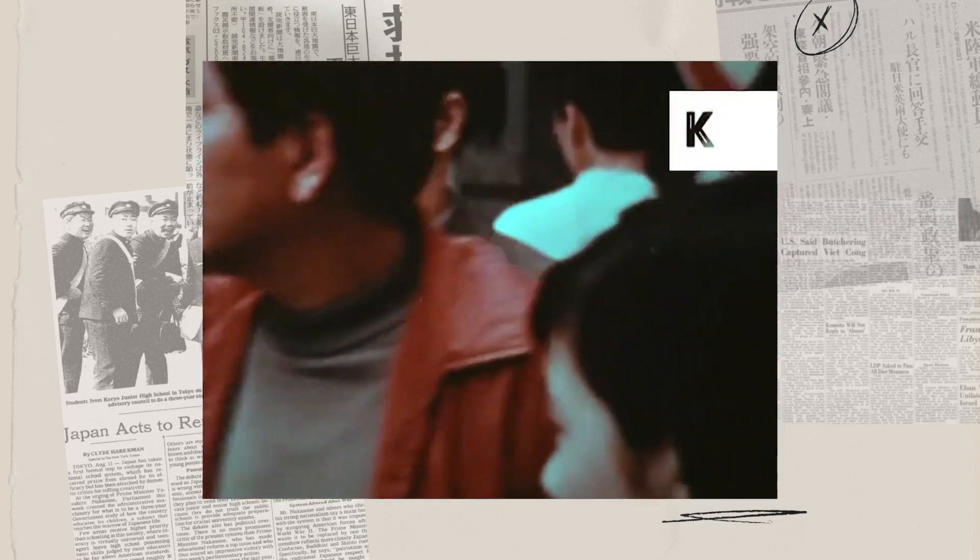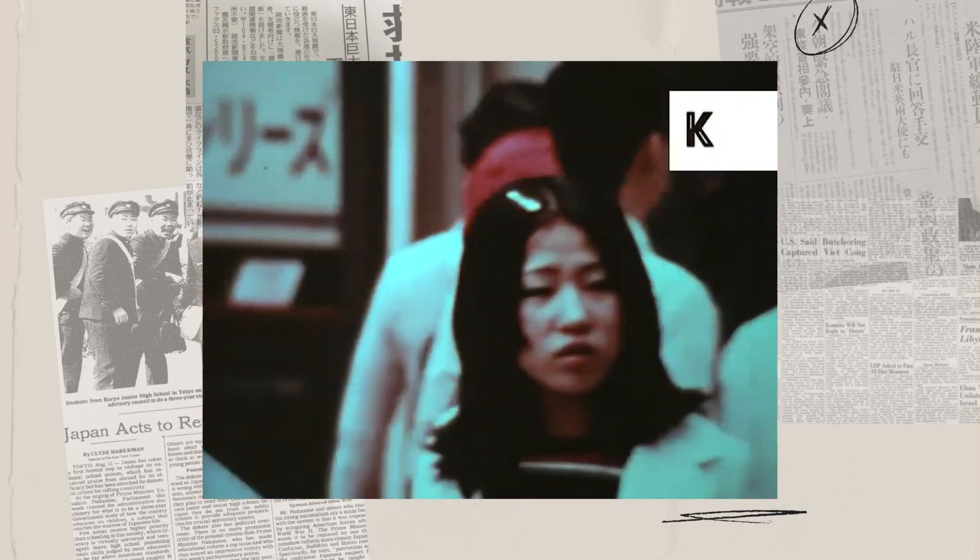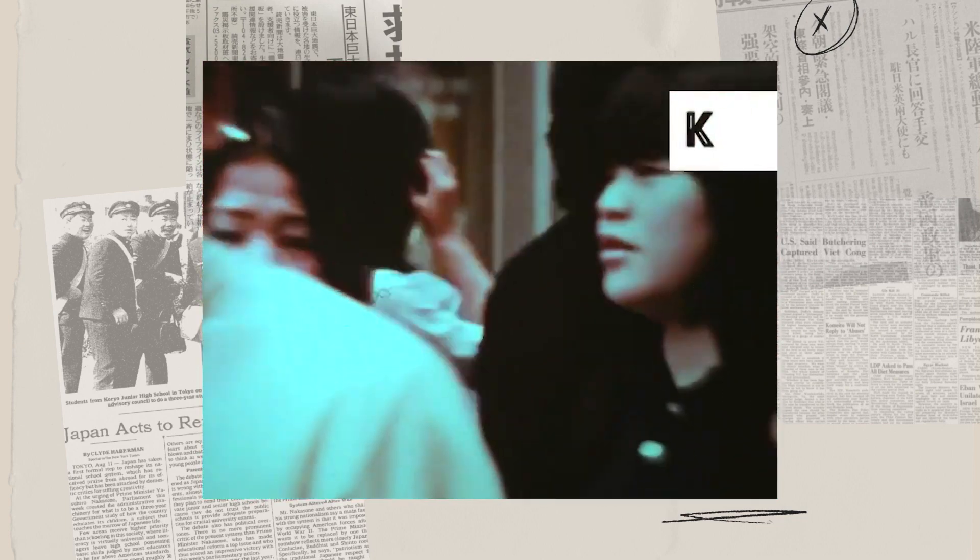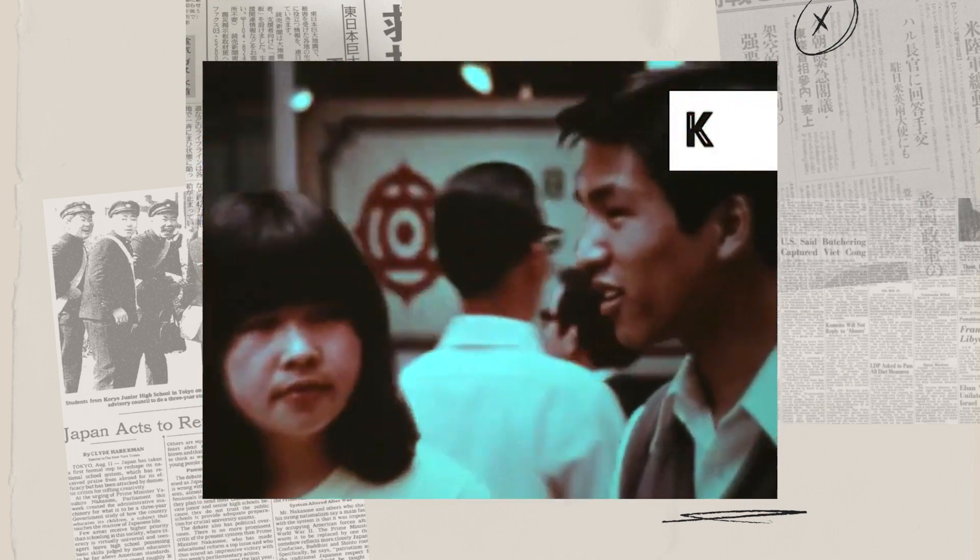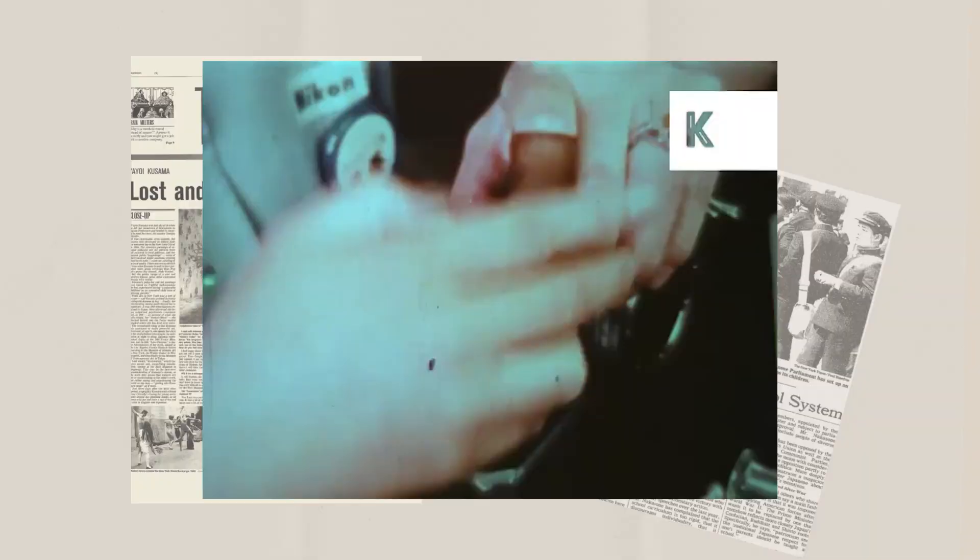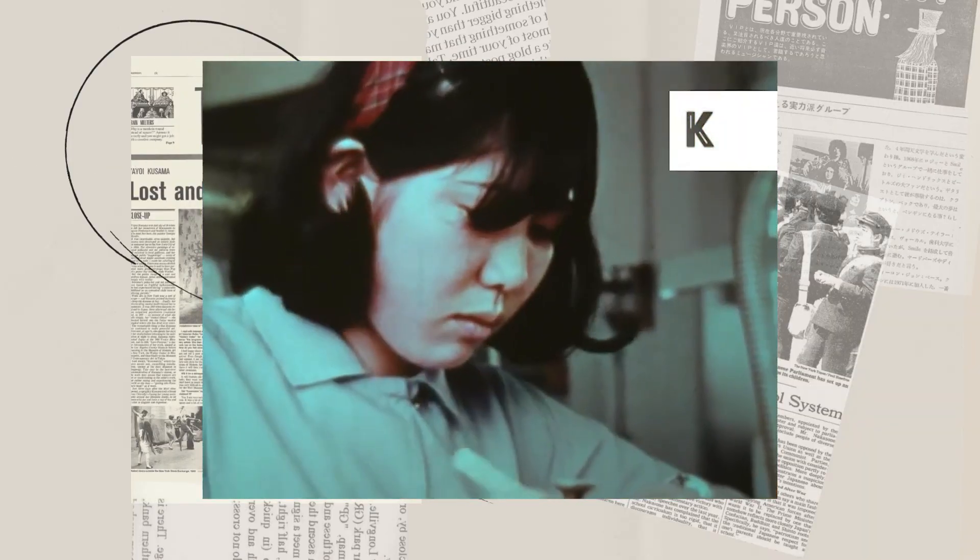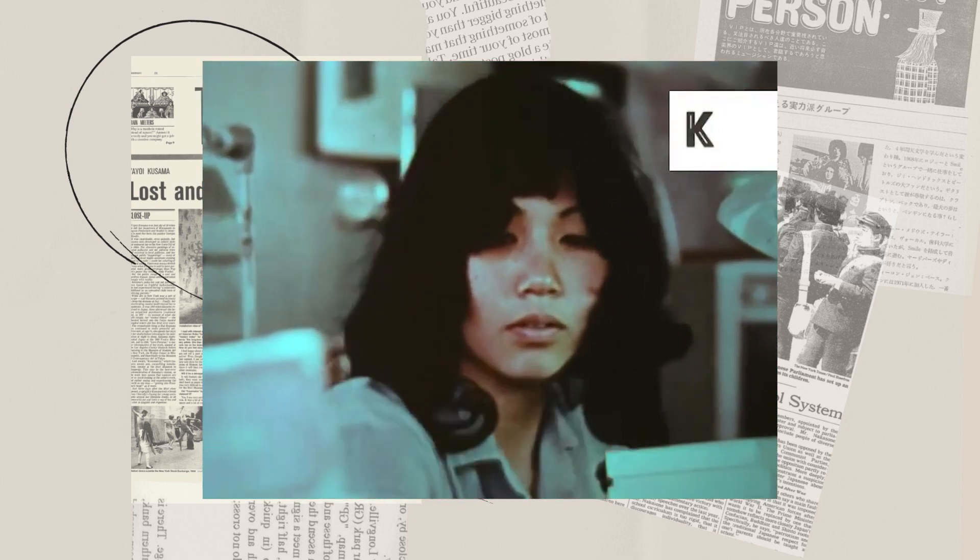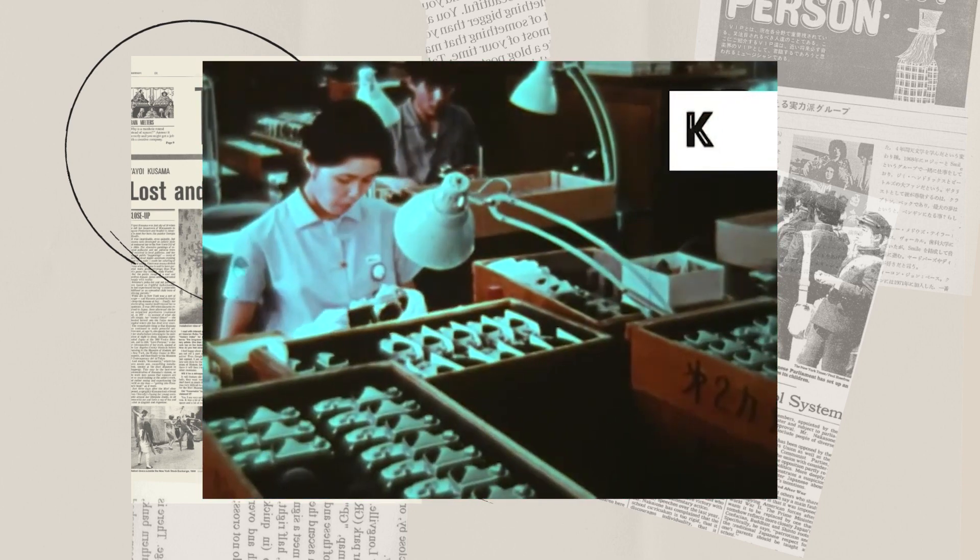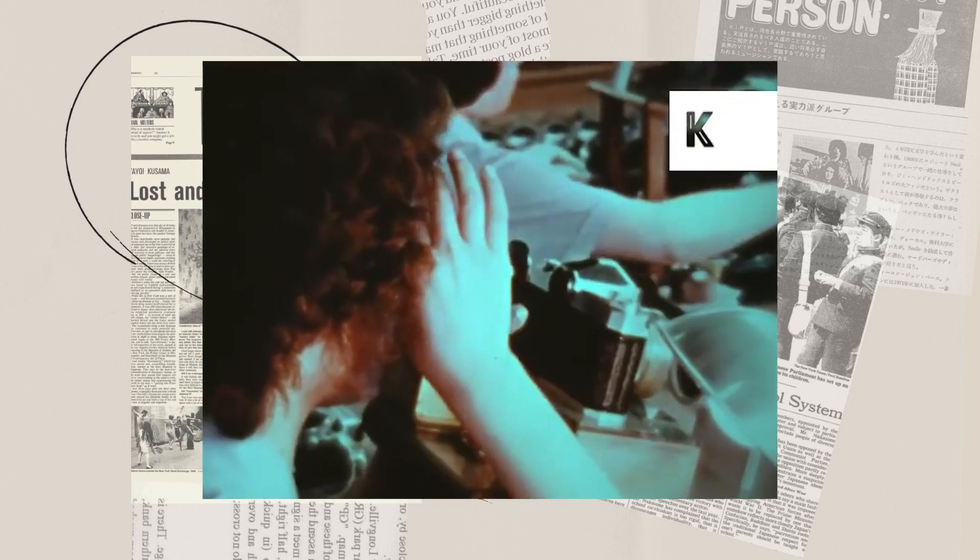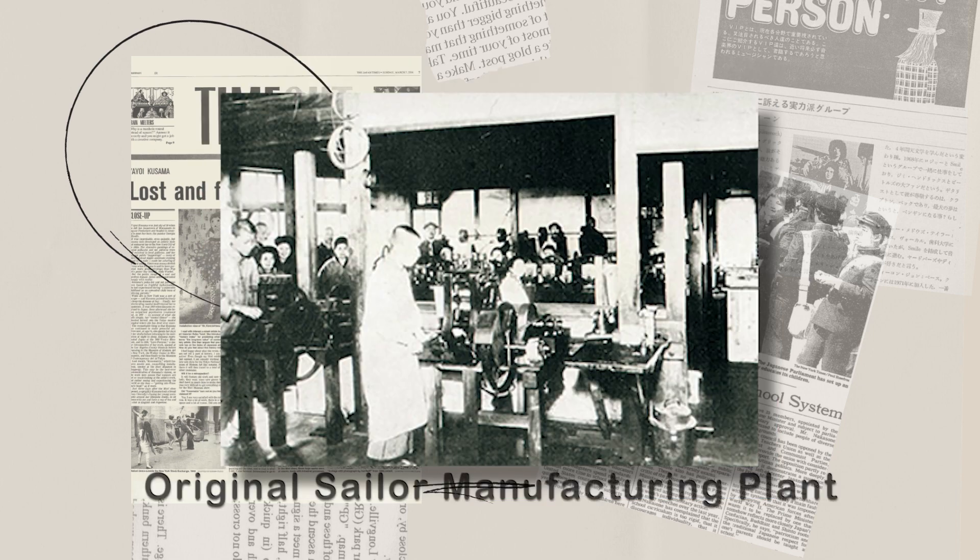Several factors contributed to this resurgence. One pivotal factor was the emphasis on craftsmanship and quality that emerged as a core value in Japanese society during the 1970s. Japan had earned a reputation for producing high quality goods across various industries, and this ethos extended to fountain pens. Japanese pen manufacturers such as Pilot, Platinum, and Sailor began producing exceptional fountain pens.